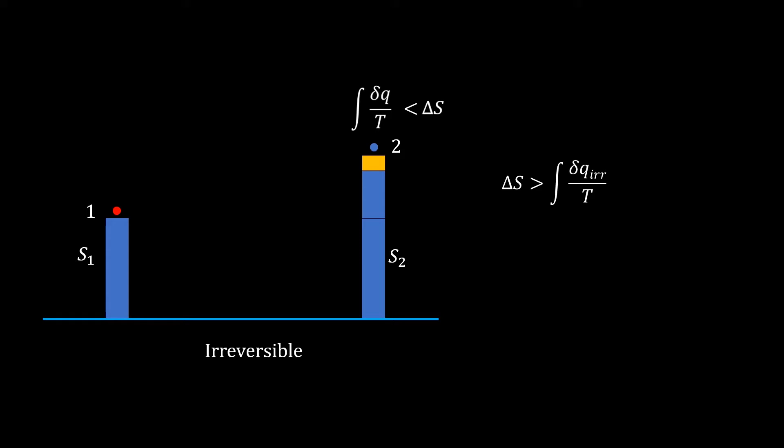Now what is this yellow part? It is the amount of entropy that must be produced in an irreversible process apart from the Q divided by T. Let's see what it is mathematically.